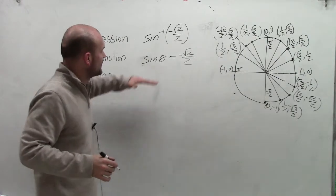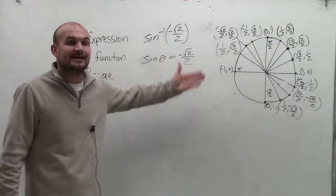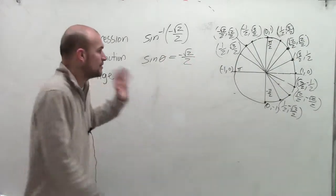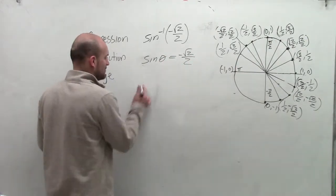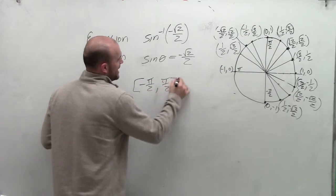And so what I'm trying to figure out when writing it in this format is saying the sine of what angle is equal to the negative square root of 2 divided by 2. And that angle theta that we're talking about has to fall within the range of negative pi halves and pi halves.